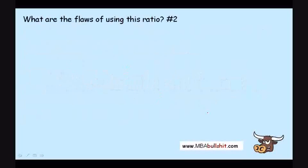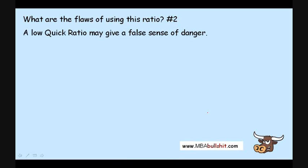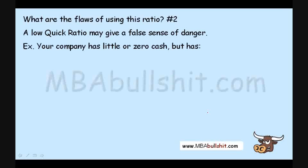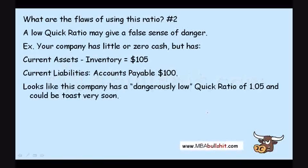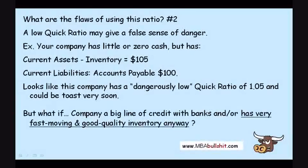By the way, quick ratio is sometimes also known as acid test ratio. The second flaw is that a low quick ratio may give a false sense of danger. If a company has quick assets of $105 and accounts payable of $100 — a dangerously low quick ratio of 1.05 — it might look like trouble. But what if the company has a big line of credit with banks? In that case, they can easily borrow cash to pay the accounts payable anyway, so they're fine.